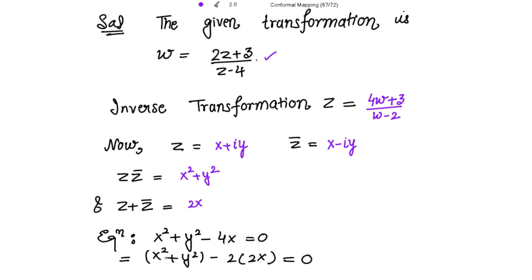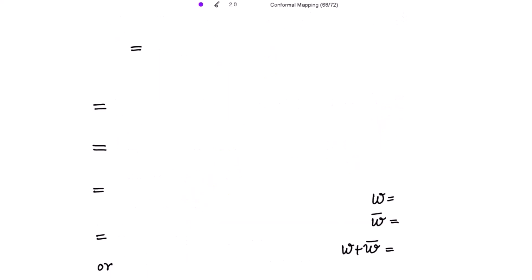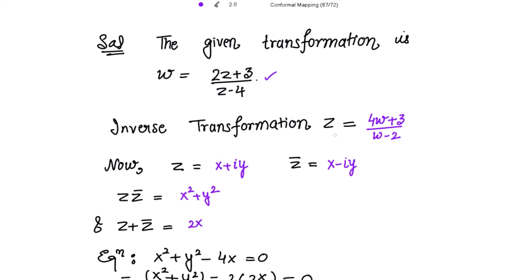The circle equation x² + y² - 4x = 0 can be rewritten — noting that x² + y² = zz̄ and 4x = 2·(2x) = 2(z + z̄) — giving us zz̄ - 2(z + z̄) = 0.